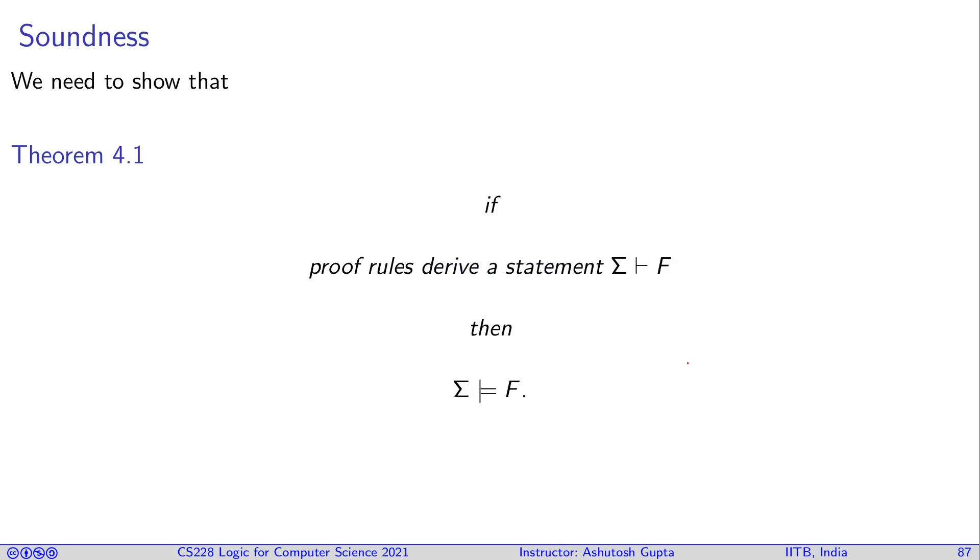So this is the correctness statement. If proof rules derive some statement, if something you derive using these proof rules—sigma proves F—then it is guaranteed that sigma implies F. It does not say the other way around. It's only one direction.